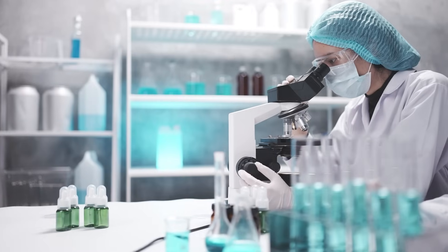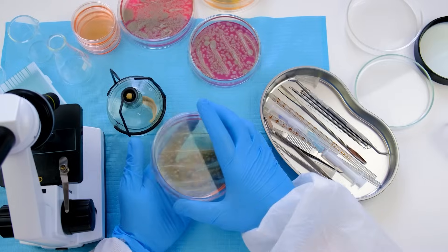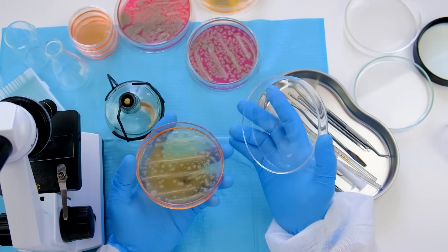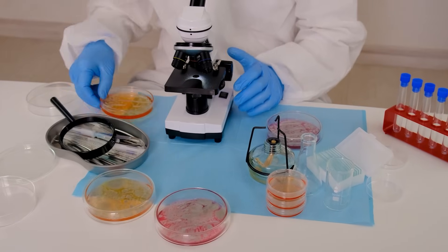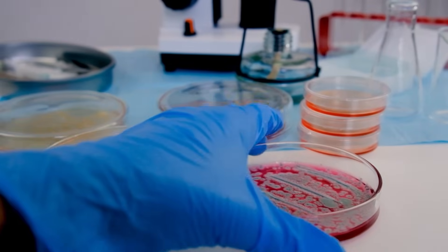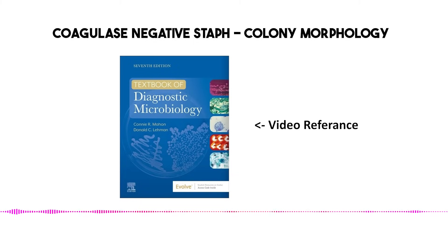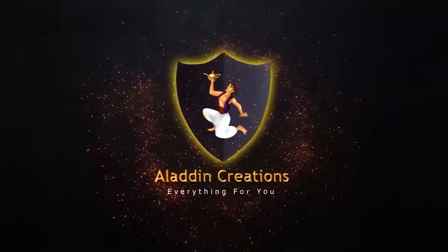Welcome to the Deep Dive. Especially if you're a medical or medical lab student, you know how vital it is to identify microbes quickly and accurately. Today our focus is the colony morphology of coagulase-negative staphylococci (CoNS) on the culture media you see every day. Think of this as your practical shortcut, pulled straight from the Textbook of Diagnostic Microbiology by Mahon and Lehman — a really solid source for this stuff.